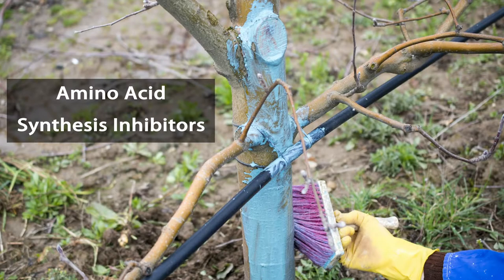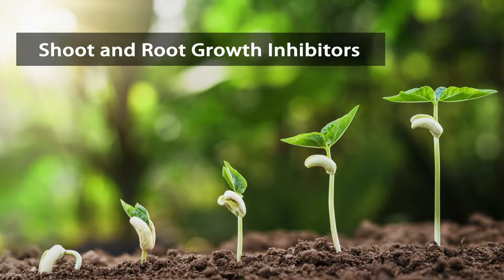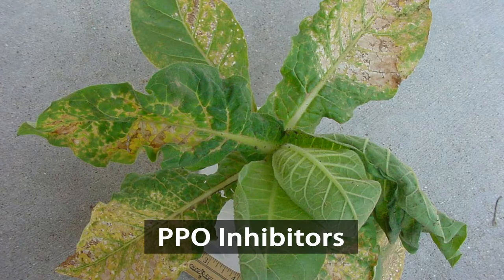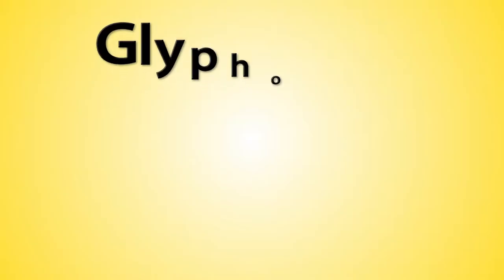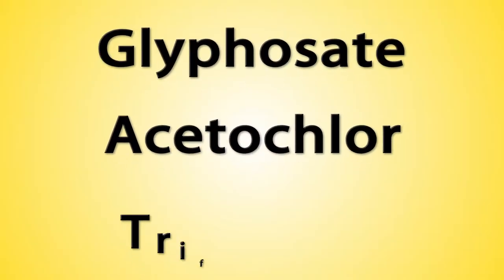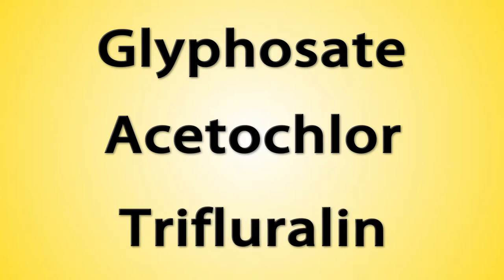There are also amino acid synthesis inhibitors, shoot and root growth inhibitors, and PPO inhibitors. Several herbicides fall into these groups, including glyphosate, acetachlor, and trifluralin. These herbicides stop or interrupt cell growth and division.